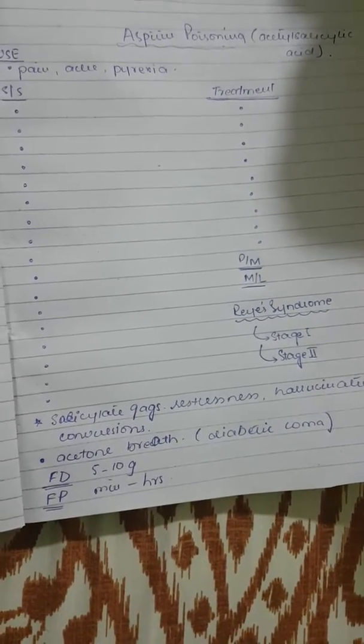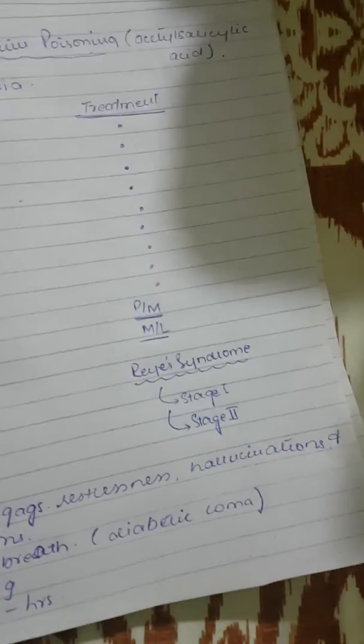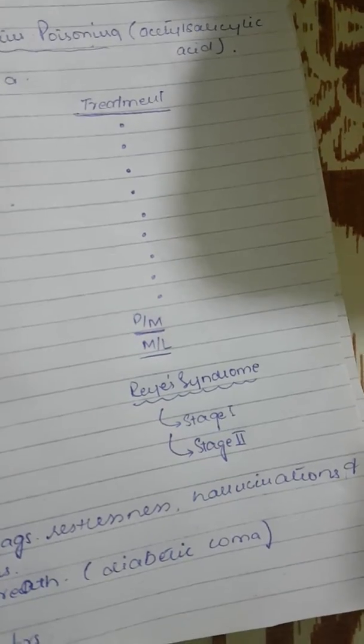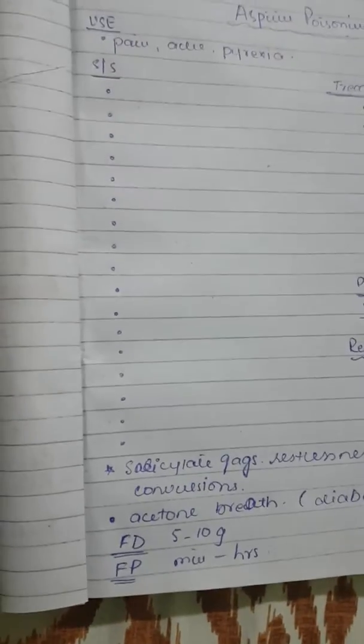Today we are going to discuss aspirin poisoning. Aspirin is also known as ASA or Acetyl Salicylate Acid. It is used for pain, aches, and pyrexia.